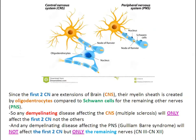Since the first two cranial nerves are extensions of brain, their myelin sheath is created by oligodendrocytes, compared to Schwann cells for the remaining other nerves. So any myelinating disease affecting the central nervous system — multiple sclerosis, for example — will only affect the first two cranial nerves, not the others. And any myelinating disease affecting the peripheral nervous system, such as Guillain-Barré syndrome, will not affect the first two cranial nerves, but only the remaining nerves.